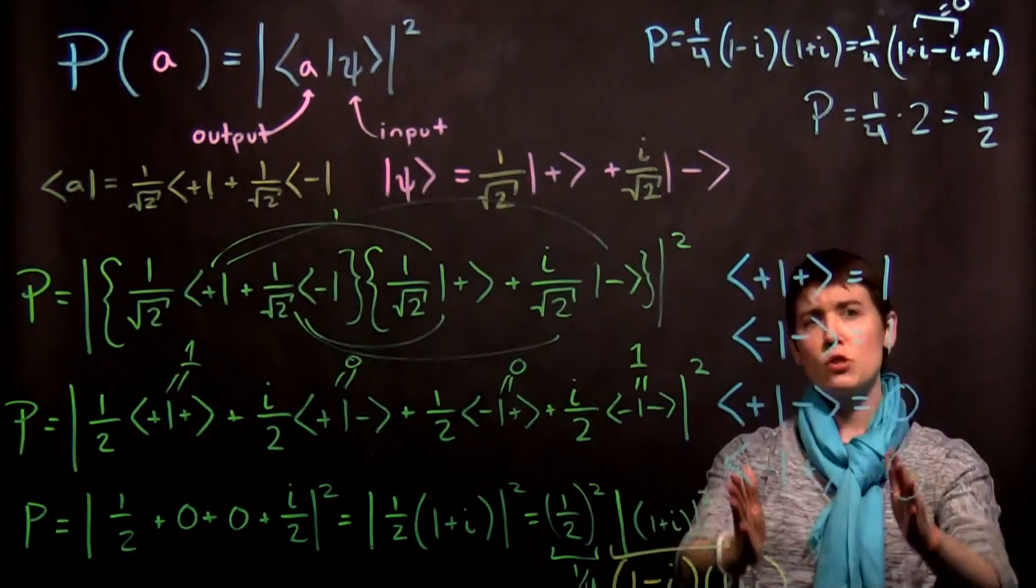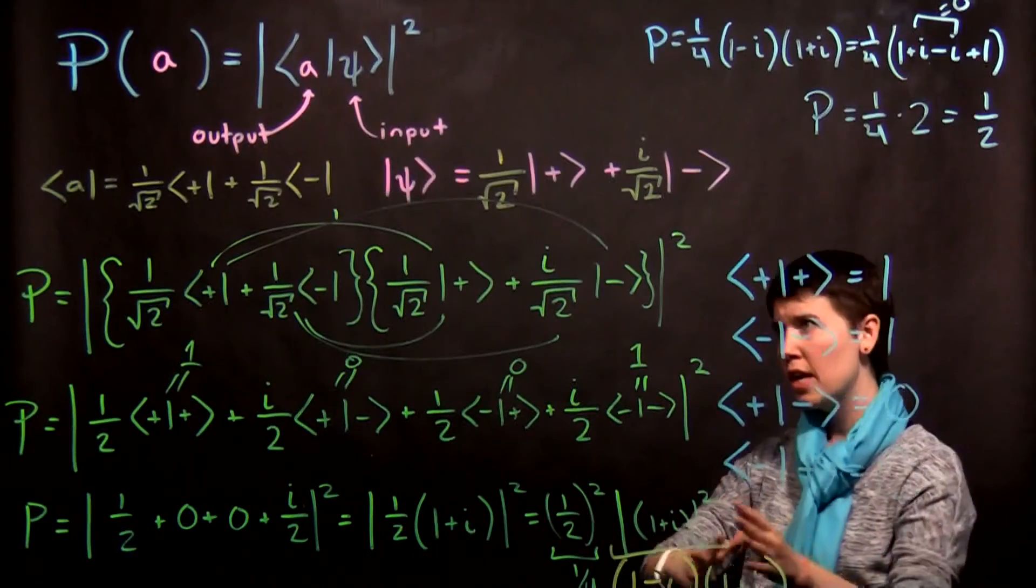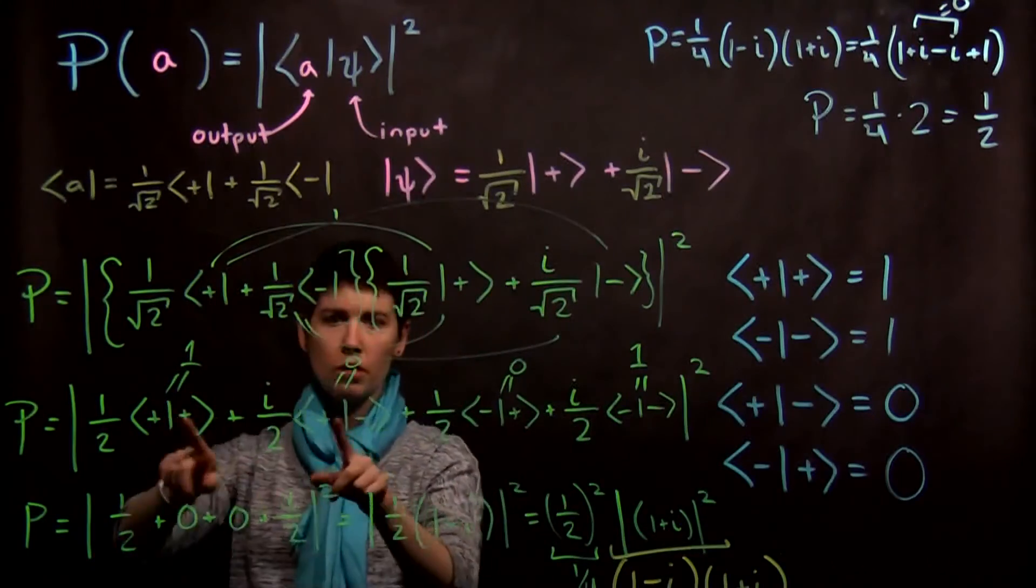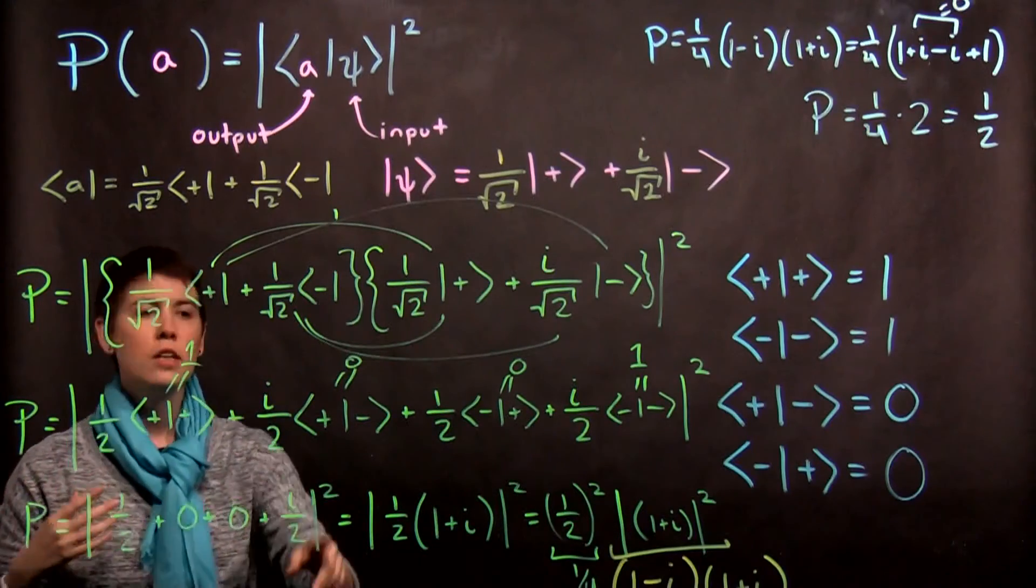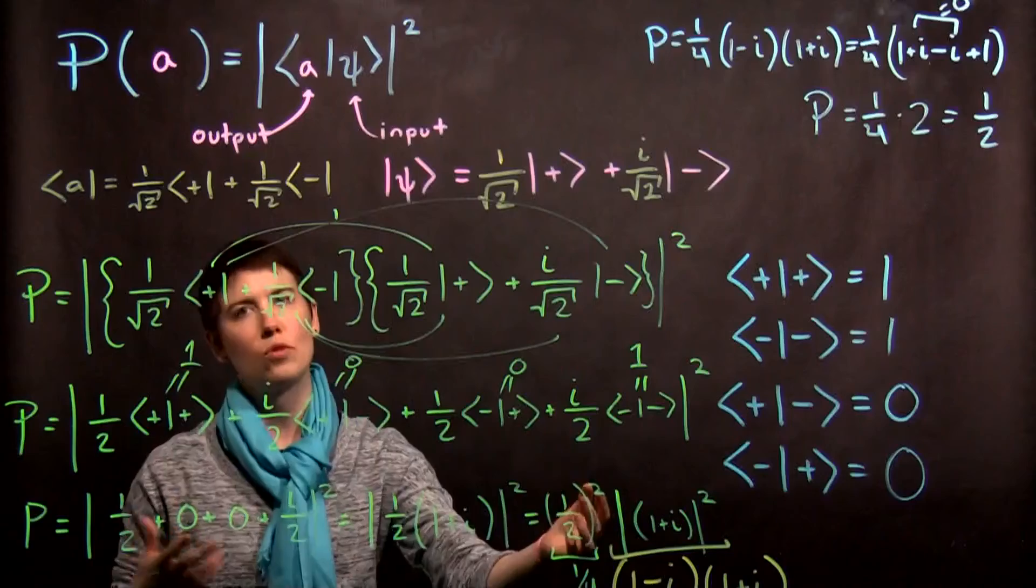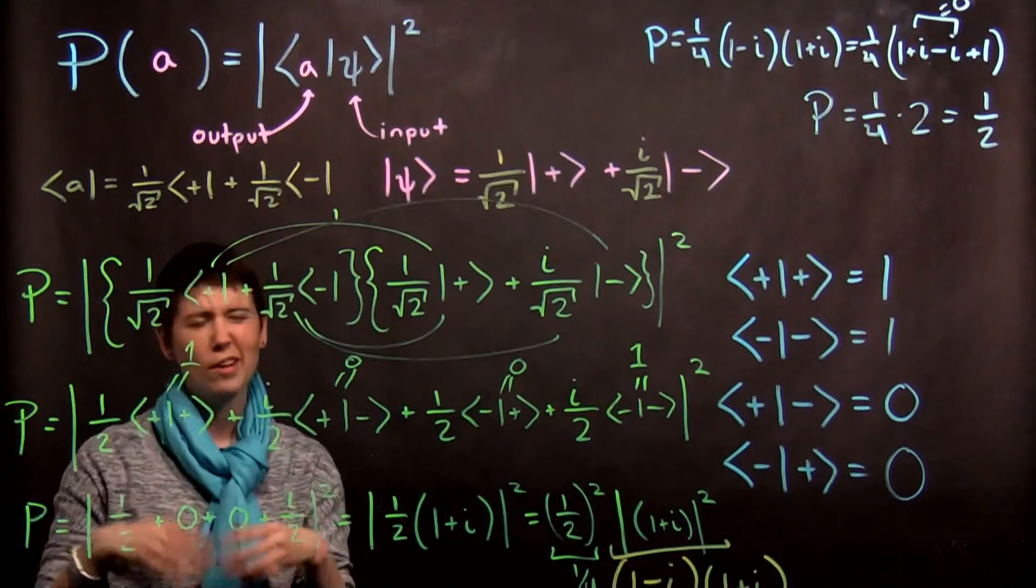And in fact, learning to work with this Dirac notation and using these properties of our bras and our kets, that's usually not the tricky part. Where students start to struggle is they drop squares, they drop factors of two, they pull things out, forget to square it. It's usually the arithmetic and algebra that get people.